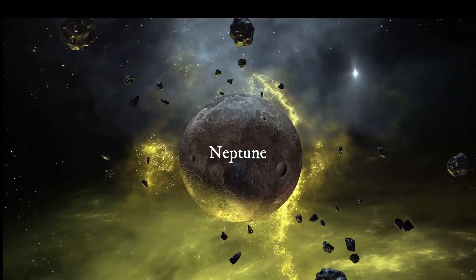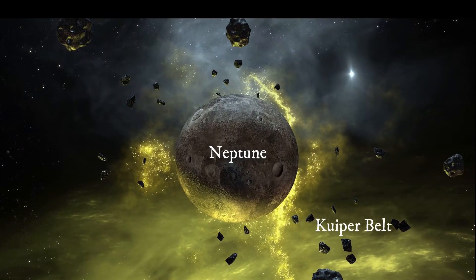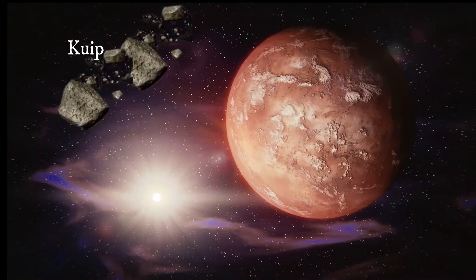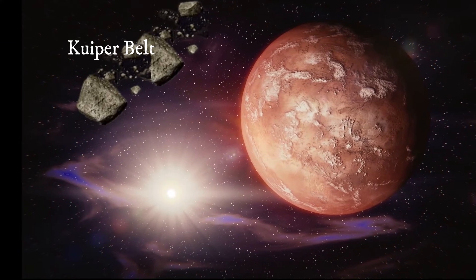Beyond the giant planet Neptune is a region which is known as the Kuiper belt. It extends from the orbit of Neptune to a distance of about 50 astronomical units from the Sun.